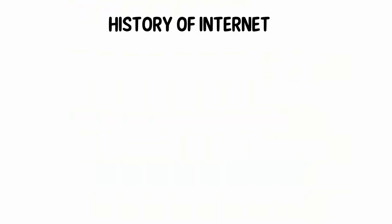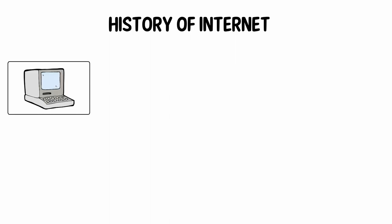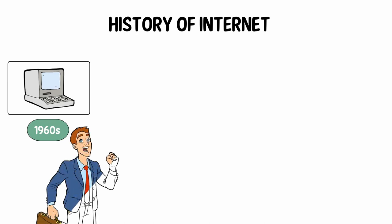History of internet. The internet started in the 1960s as a way for government researchers to share information. However, computers in the 1960s were large and immobile, and in order to make use of information stored in any one computer, one had to either travel to the site of the computer or have magnetic computer tapes sent through the conventional postal system.